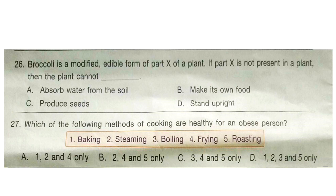Question 27: Which of the following methods of cooking are healthy for an obese person? 1. Baking, 2. Steaming, 3. Boiling, 4. Frying, and 5. Roasting. The correct answer is option D — 1, 2, 3, and 5 only. Frying is not healthy.